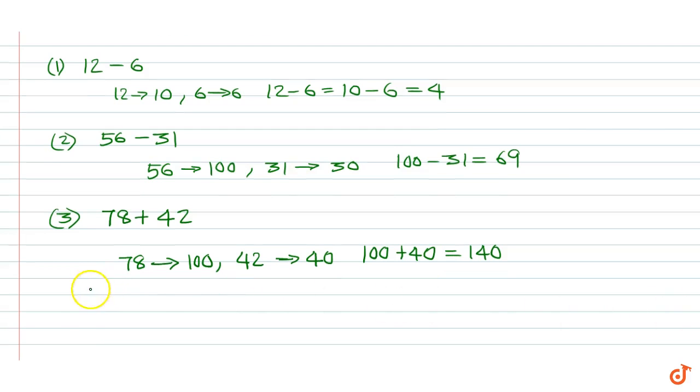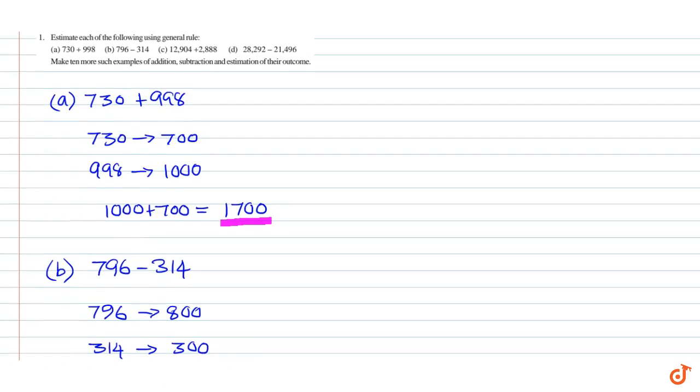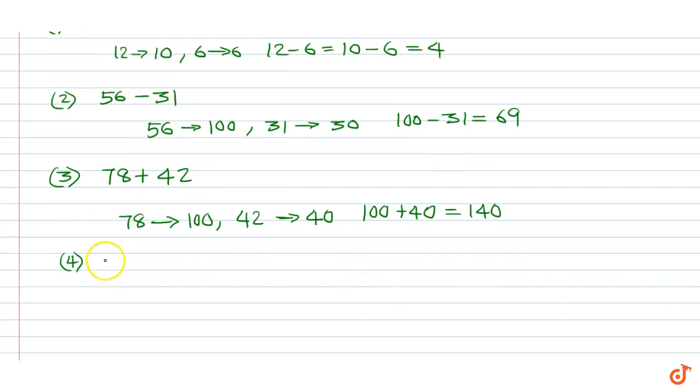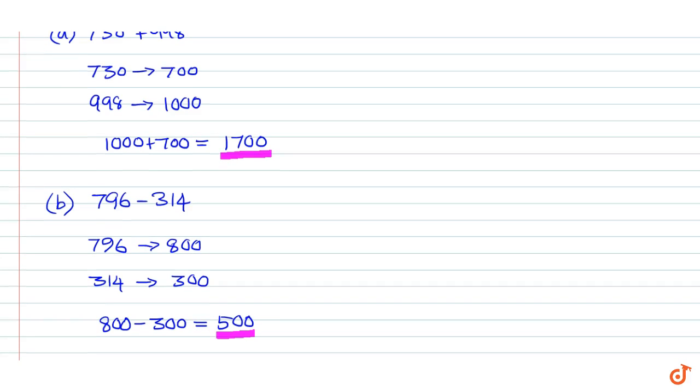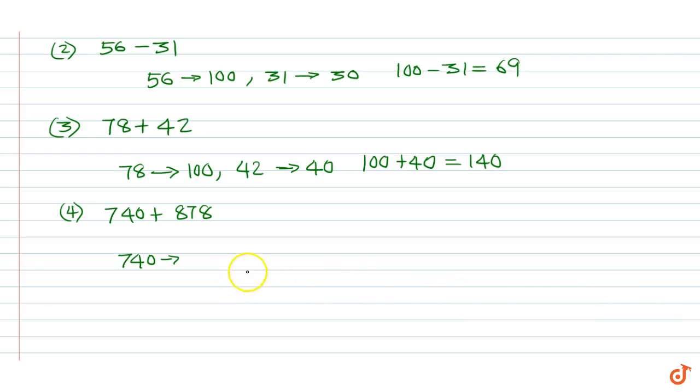Example 4: 740 plus 878. 740 rounds up to 700, 878 rounds up to 900. Therefore 700 plus 900 is equal to 1600.